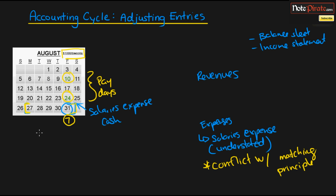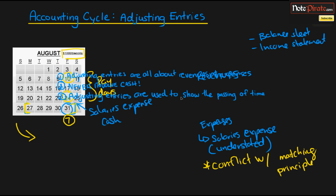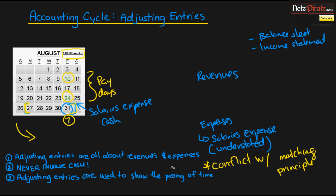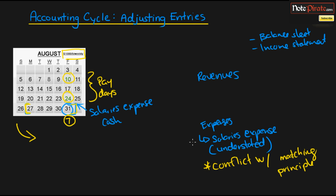The adjusting entry we're going to perform is an expense adjusting entry, because we are not earning revenue — we are paying employees. Adjusting entries are all about revenues and expenses, and this will not involve cash. Salaries expense is understated, so we're going to debit salaries expense to record the additional expense for that last week of August.